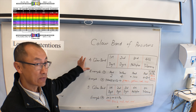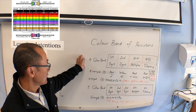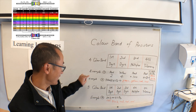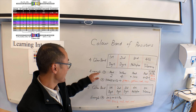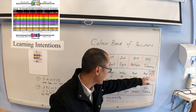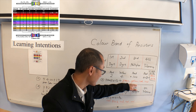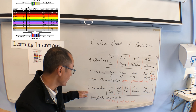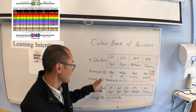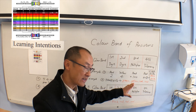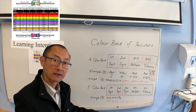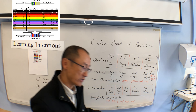You have to understand whether it is a four-color band or a five-color band, and then convert from color to value or from value to color. The same applies for the five-color band. Thanks for watching.